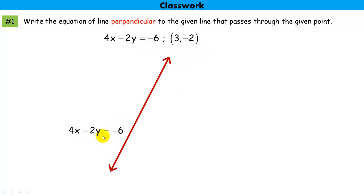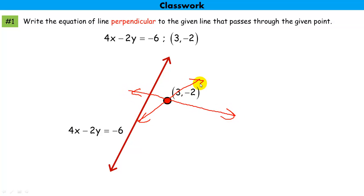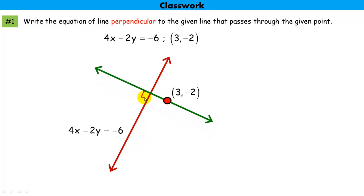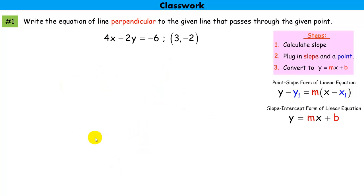Here's the line we have — notice it's written in standard form. I want a line that goes through this point and is perpendicular to that line. There are an infinite number of lines that go through this point, but only one that is also perpendicular to this line. So I need to figure out the equation of that line in slope-intercept form, and the first thing I need is the slope.